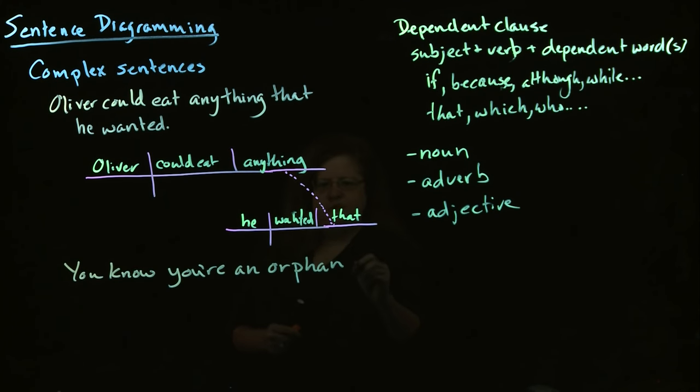And in this case, we actually have an implied dependent word. We have the word that, which we don't have here in the sentence. It's just implied. You know that you're an orphan. And in fact, a lot of times, if the dependent word is that, it is invisible like that. It's implied rather than being in the sentence itself.